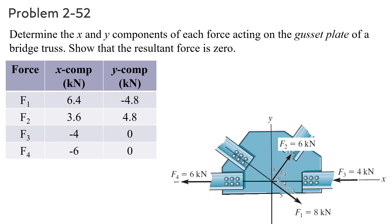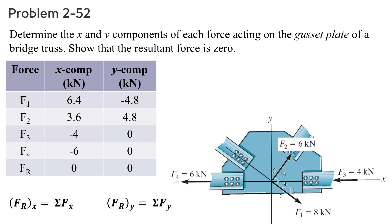To find the resultant of these forces, using the equations: FRx equals 6.4 plus 3.6 minus 4 minus 6 equals 0, and FRy equals negative 4.8 plus 4.8 equals 0. So, the resultant force is zero.